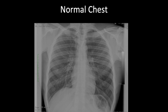The next thing is the inspiratory effort. You want to pull the diaphragms all the way down as far as possible so that you can see as much of the lungs as possible. You assess the inspiratory effort by counting the ribs. These are the posterior aspects of the ribs, and these are the anterior portions which come down. Five to eight anteriorly, or nine to eleven posteriorly, would be adequate for a good inspiratory effort.